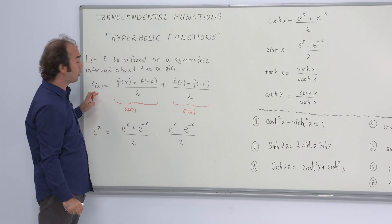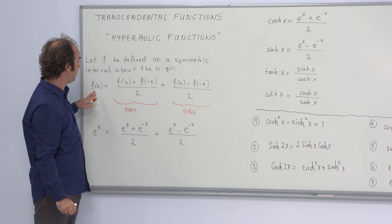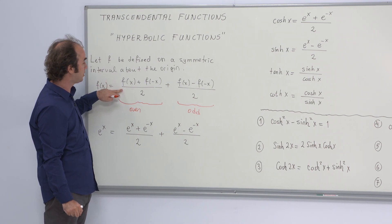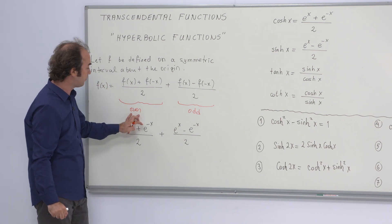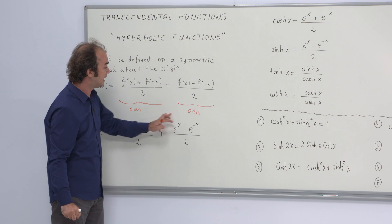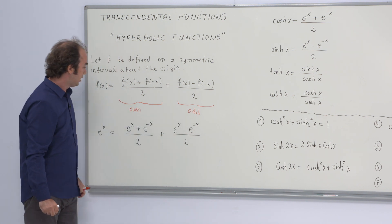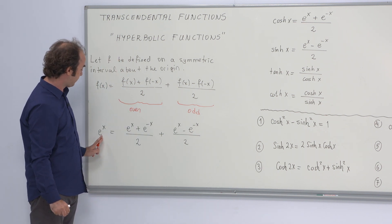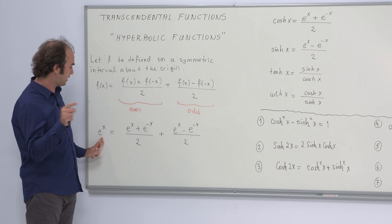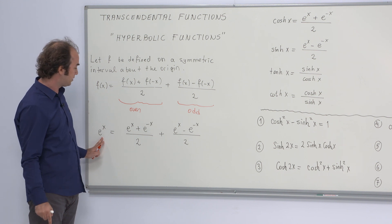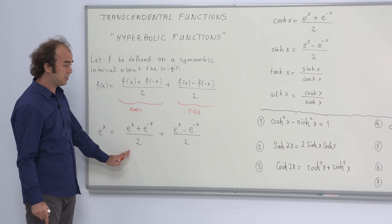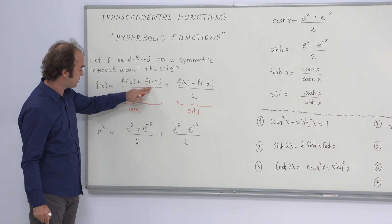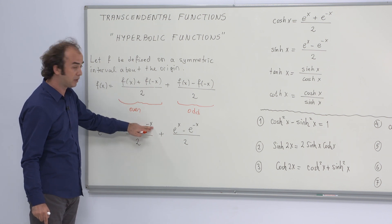Therefore, you can always write any function f of x, which is defined on a symmetric interval about the origin, as the sum of an even function and an odd function. If you do that for the exponential function defined on the interval minus infinity to infinity, you obtain f of x equal to e to the x, and f of minus x equal to e to the minus x.